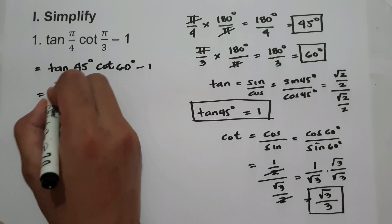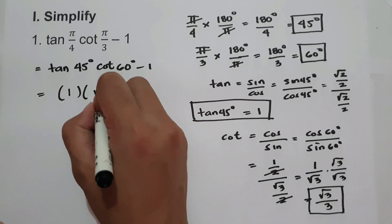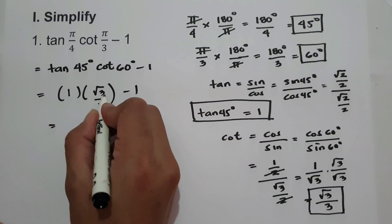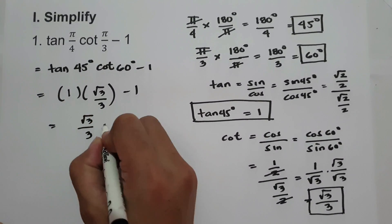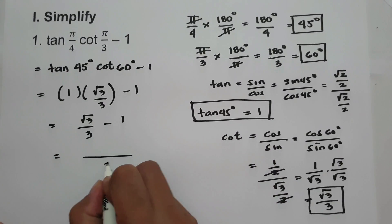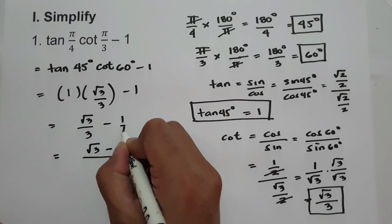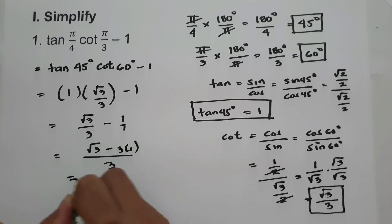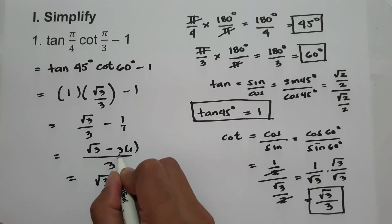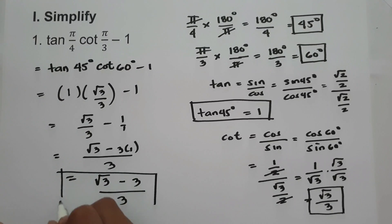And let us simplify. Tangent 45 is 1, and cotangent 60 degrees is square root of 3 over 3 minus 1. 1 times square root of 3 over 3 minus 1. Since we have 3 as the denominator, we're going to have square root of 3 minus 3 over 3. Therefore, our final answer is square root of 3 minus 3 over 3.